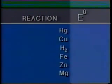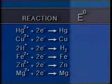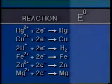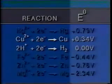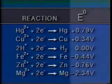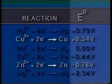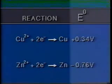By comparing the hydrogen standard with many different substances, chemists have produced a table of reduction reactions and their half-cell potentials. With this table we can examine any two possible reactions, such as this familiar pair.